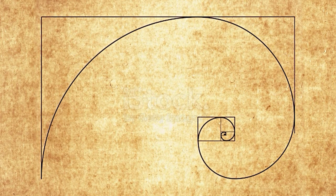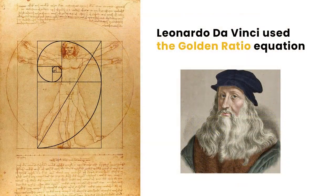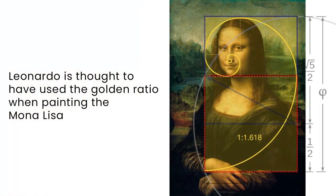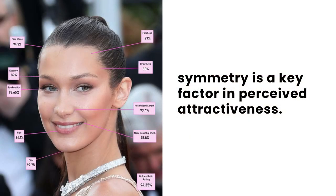The golden ratio, also known as Phi or the Fibonacci number, is the mathematical symmetry algorithm that underlies our perception of attractiveness. The Italian Renaissance polymath Leonardo da Vinci used the golden ratio equation and realized that the closer a face or object gets to this number, the higher its perceived beauty. In fact, Leonardo is thought to have used the golden ratio when painting the Mona Lisa. Studies of the most beautiful women in the world have shown that they have countless instances of this ratio in their faces.